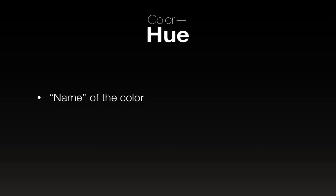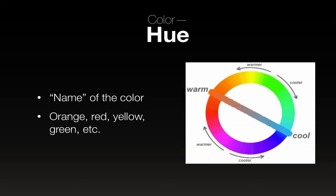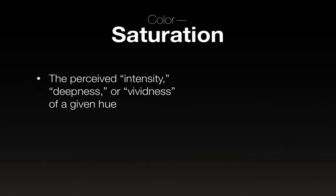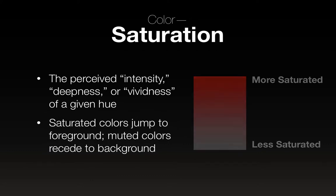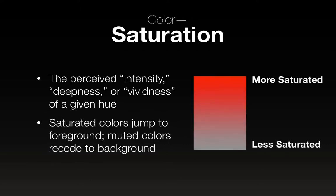The hue is the name of the color — what's commonly referred to as the name: red, green, yellow, and so on. Those are called hues. Saturation is the perceived intensity, deepness, or vividness of a given hue. Saturated colors tend to jump to the foreground and muted colors recede to the background. Here's a spectrum from the most saturated red down to the least saturated, which basically is gray. The tendency for fledgling designers is to pick the most saturated colors, but you don't have to — it tends to look kind of crummy.